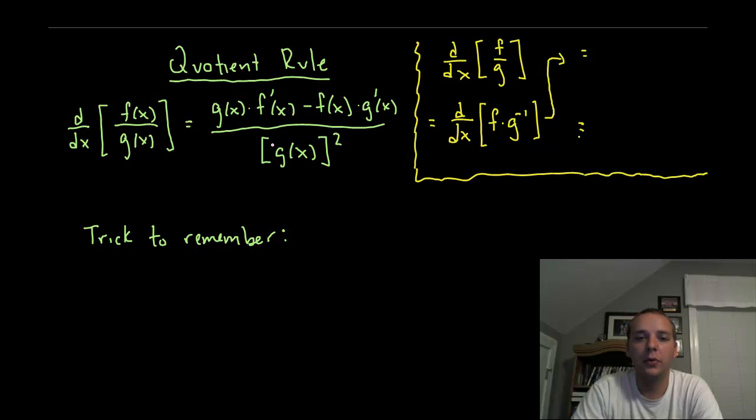The quotient rule is another derivative rule that helps us differentiate when we have functions that contain fractions, or one function divided by another function.